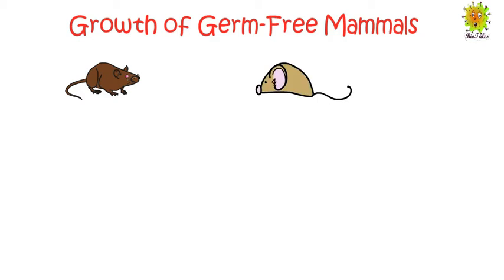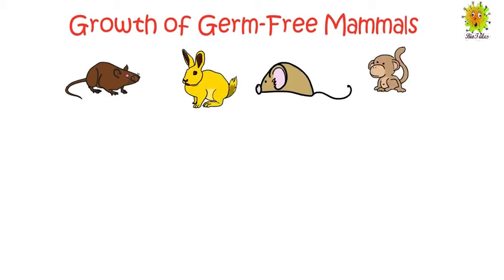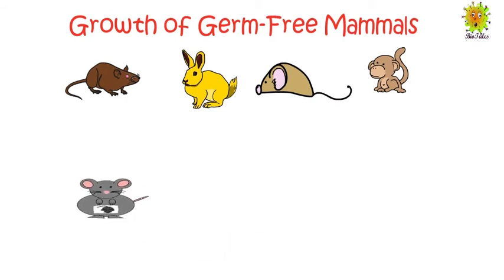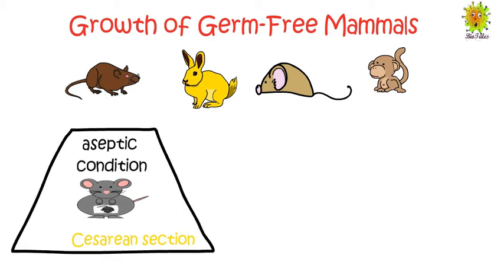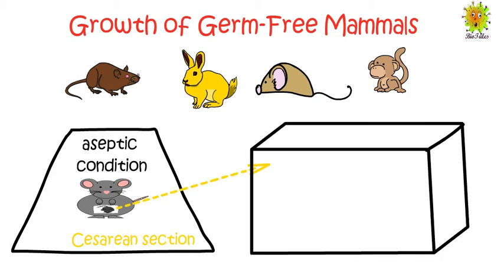For mammals like rats, mice, hamsters, rabbits, and monkeys, growing a germ-free colony is not as simple as it is for birds. In mammals, the baby is born from a pregnant female through a caesarean section under aseptic conditions — conditions in which microorganisms are absent. These newborn animals are then transferred to sterile isolators where all incoming air and food must be sterilized.